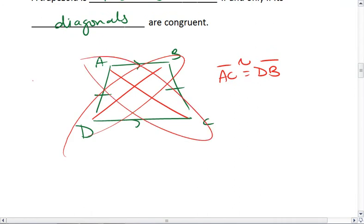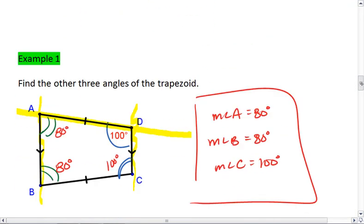That's all you need to know about isosceles trapezoids. The pairs of base angles are congruent, and the diagonals are congruent. An isosceles trapezoid occurs when the legs are congruent.